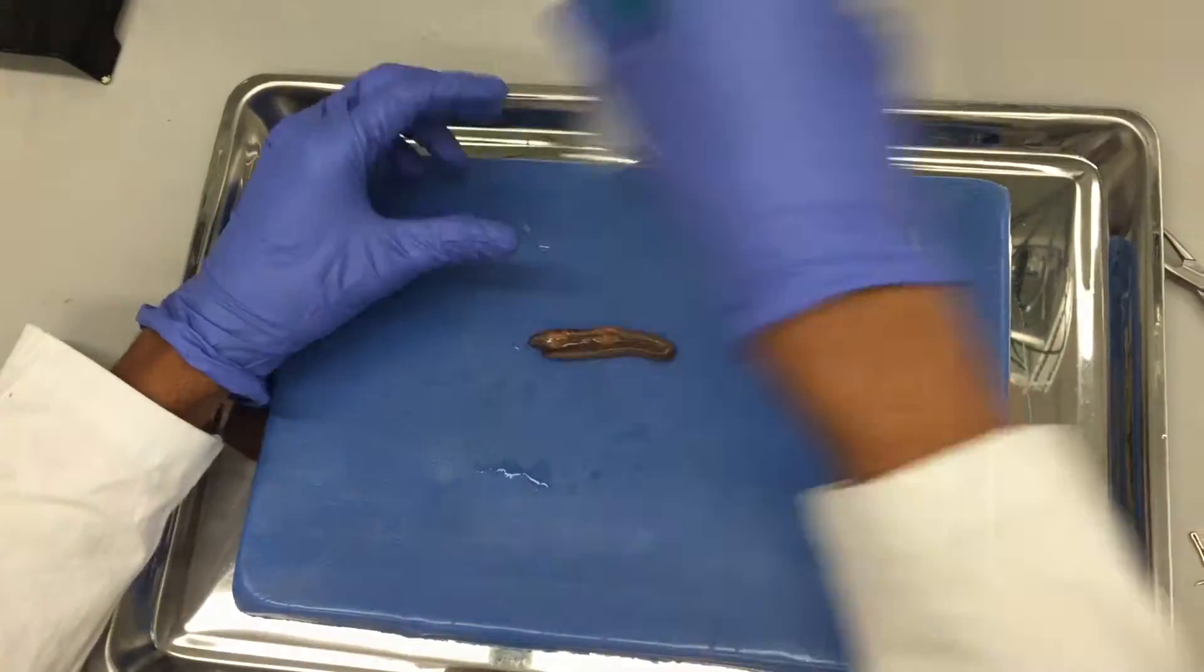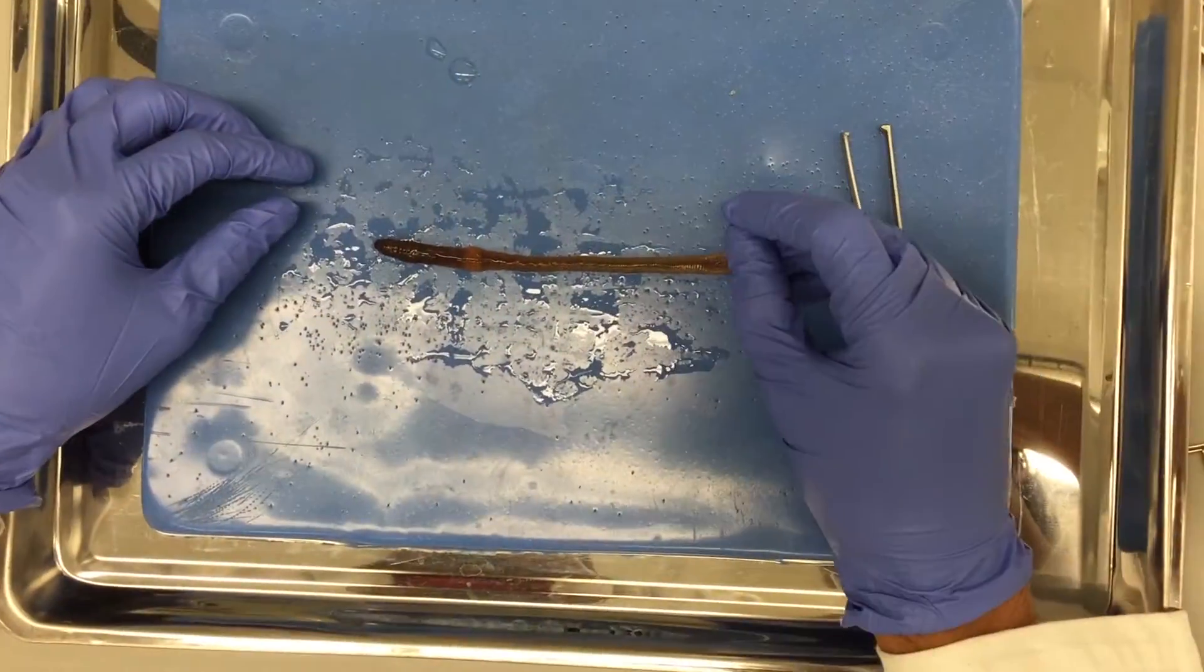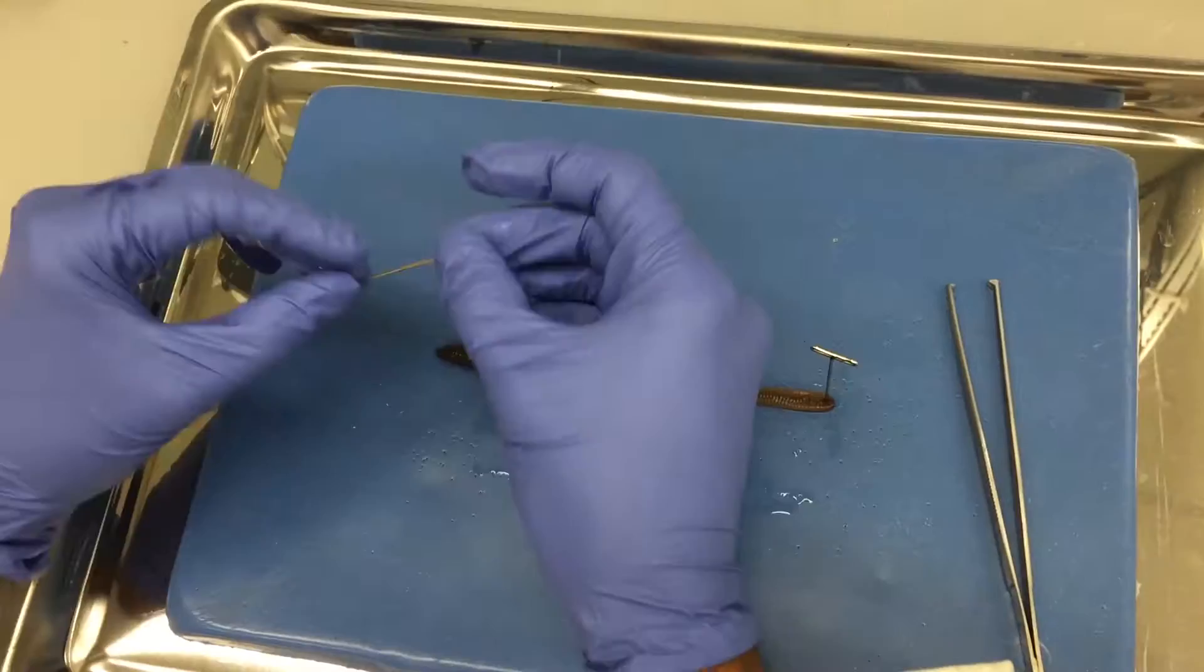Once you take out the worm, you will lay it dorsal side up. Stretch it out so that it is straight and pin it down at either end.